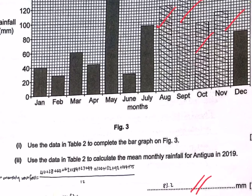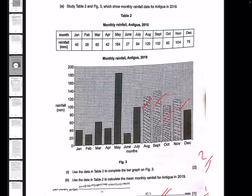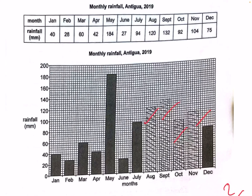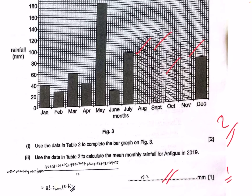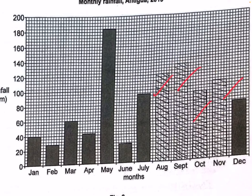Next, we're looking at using Table 2 data to calculate the mean monthly rainfall for Antigua in 2019. You have 12 months of mean monthly rainfall already in your table. Take an average of the 12 months and you'll get the required mean monthly rainfall. You'll see that it's actually in the low 80s, which is a very significant amount of rainfall.